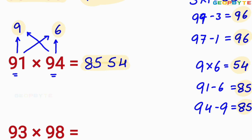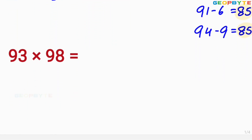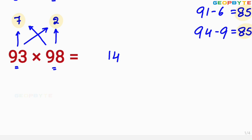Similarly, let us take one more multiplication: 93 into 98. Here, 98 is less than 100 by 2. 93 is less than 100 by 7. First, you multiply 7 and 2. What is 7 into 2? 7 into 2 equal to 14. Write that 14 there. Then you write 93 minus 2 or 98 minus 7. 93 minus 2 equal to 91, or 98 minus 7 also equal to 91. Write 91 here. Therefore, 9114 is the value of 93 into 98.